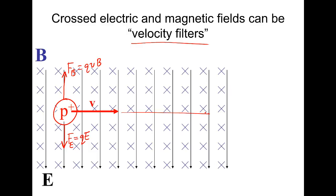And if it's to go in a straight line, then we know that the magnetic force must equal the electric force, or qvB is equal to qE. And that means that the velocity of this is E over B.